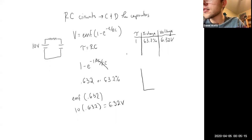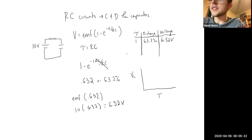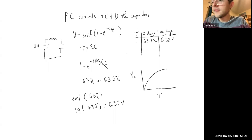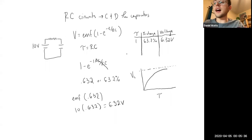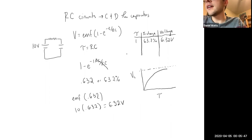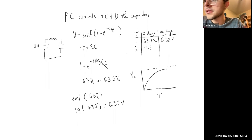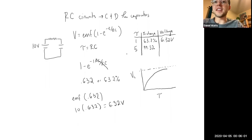Graphically, this is how it's going to look. As time passes, the voltage on the capacitor starts at zero and goes up in a non-linear fashion. There's a threshold at the top equal to the voltage put out by the voltage source — it's never going to be charged above that. If you plug in five for the number of time constants, you get 99.3 percent, which is pretty much fully charged. Usually five time constants is how long it takes for the capacitor to be charged.